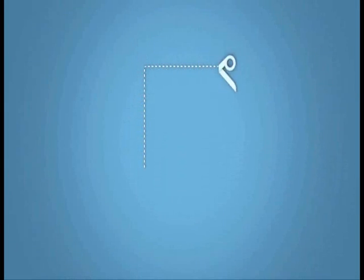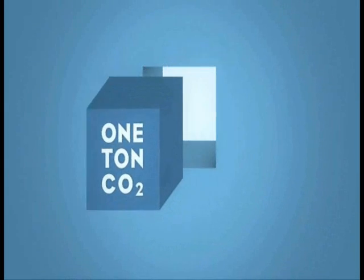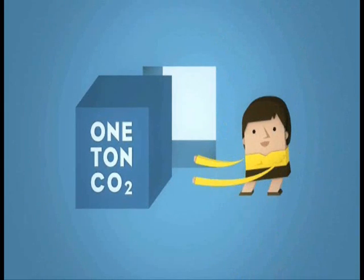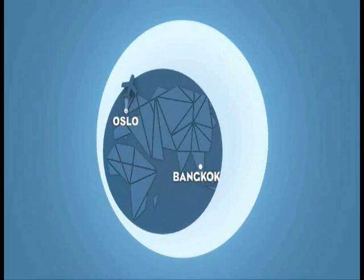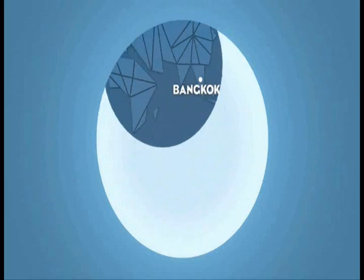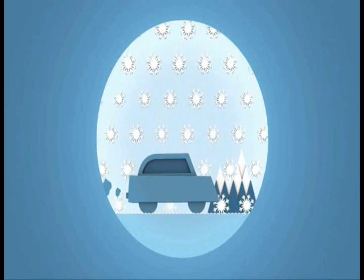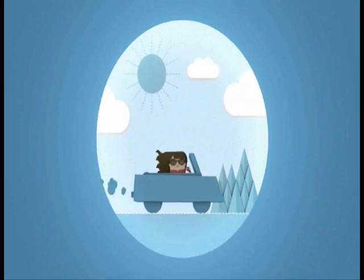A carbon unit is a permit to emit one ton of CO2. This is equal to the emissions of a one-way flight from Oslo to Bangkok for one person, or five months of driving by an average Norwegian motorist.